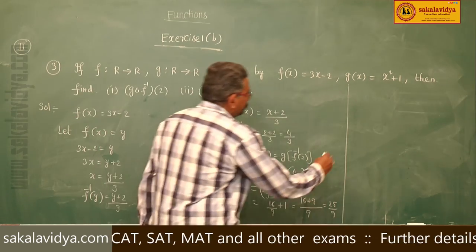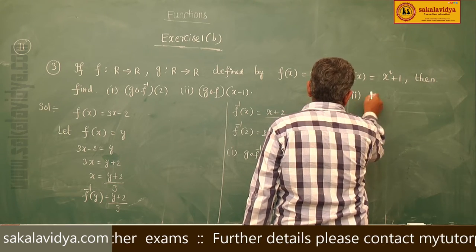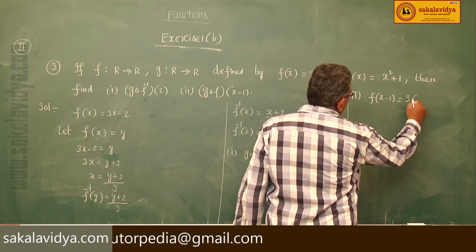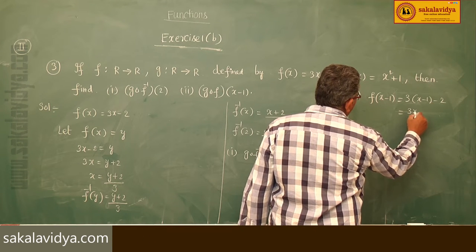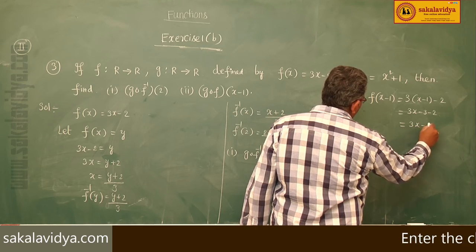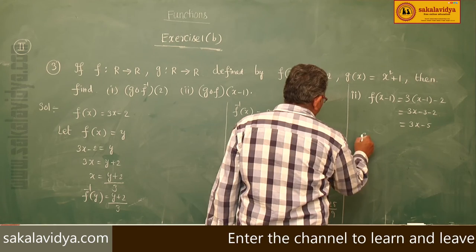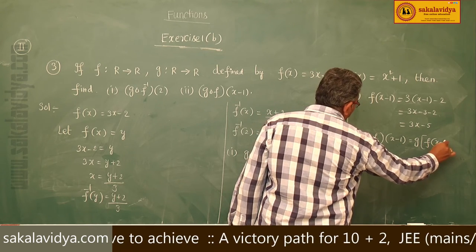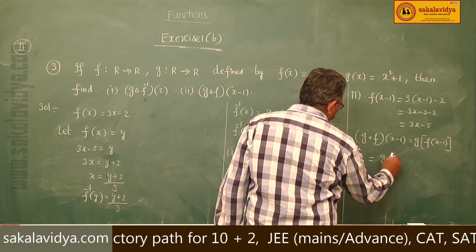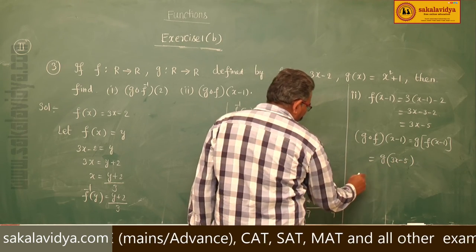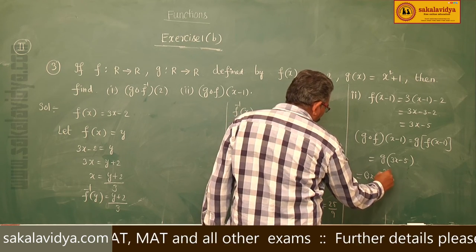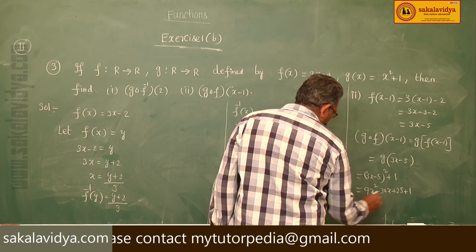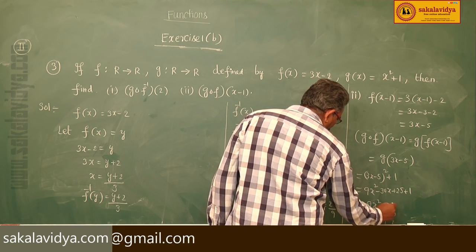Now, second problem: first find F(x − 1). F(x) = 3x − 2, so F(x − 1) = 3(x − 1) − 2 = 3x − 5. Now, G∘F(x − 1) = G(F(x − 1)) = G(3x − 5). This equals (3x − 5)² + 1 = 9x² − 30x + 25 + 1 = 9x² − 30x + 26.